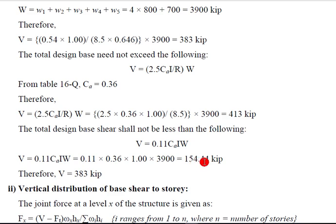You will get the value of V is 154.44 kips. So our V is in between these limits. It means that the design value is 383 kips.